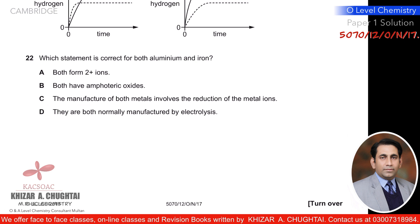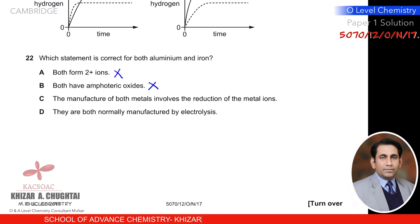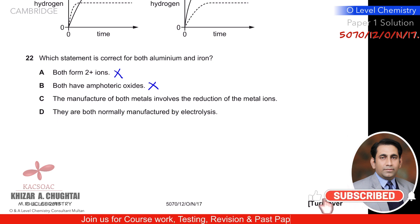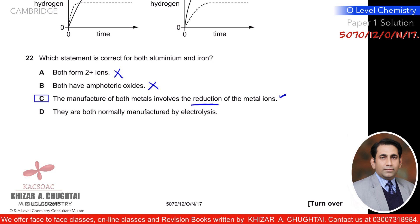Question twenty-two: which statement is correct for both aluminium and iron? Both form 2⁺ ions — no, aluminium forms Al³⁺. Both have amphoteric oxides — no, only aluminium has an amphoteric oxide. The manufacture of both metals involves reduction of their metal ions — yes, both are produced by reduction. So C is the correct option.